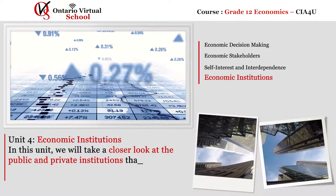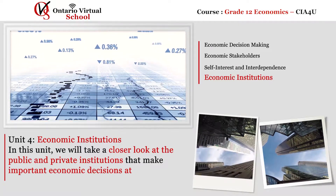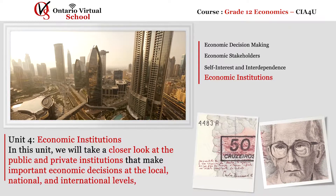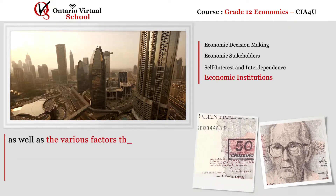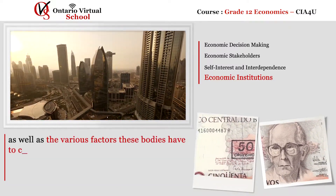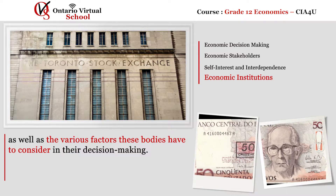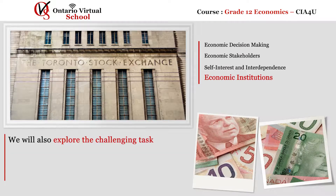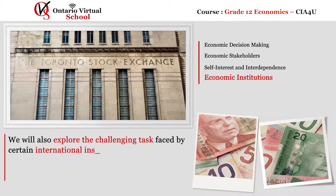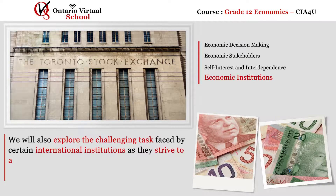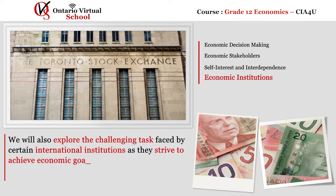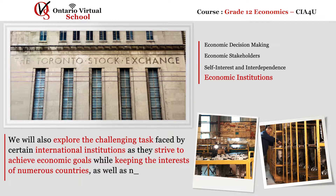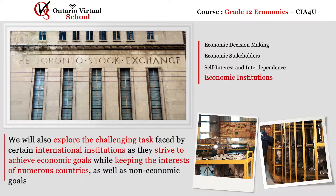Unit Four: Economic Institutions. In this unit, we will take a closer look at the public and private institutions that make important economic decisions at the local, national, and international levels, as well as the various factors these bodies have to consider in their decision-making. We will also explore the challenging task faced by certain international institutions as they strive to achieve economic goals while keeping the interests of numerous countries as well as non-economic goals in mind.